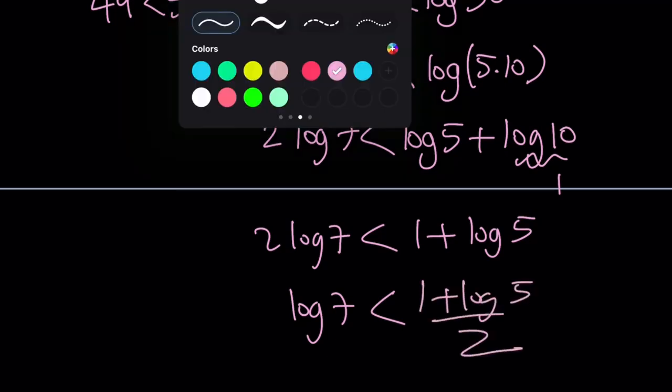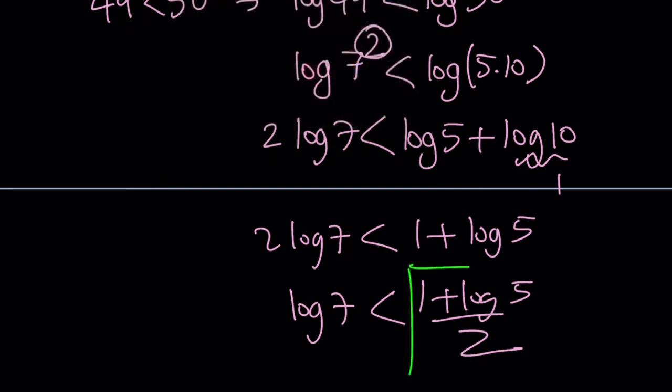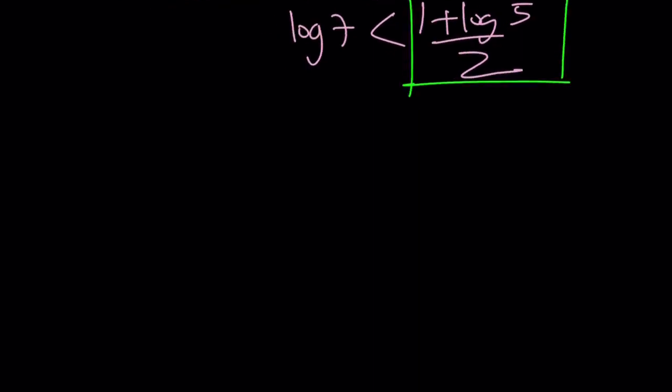So that is the end of the first method. We were looking for the larger number and that happens to be 1 plus log 5 over 2. Let's go ahead and take a look at the second method. I said I was going to do 1 and 3, but I changed my mind, I'm going to do 1, 2, 3. I'll try to keep it short.